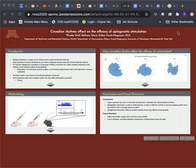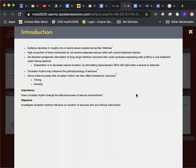My project looked at circadian rhythm's effect on the efficacy of optogenetic stimulation. Epilepsy develops in roughly one in twenty-seven people during their lifetimes, and a high proportion of these individuals do not receive adequate seizure relief with current treatments.